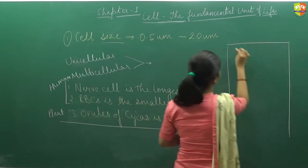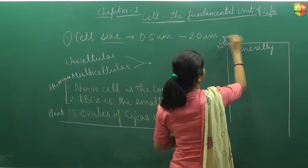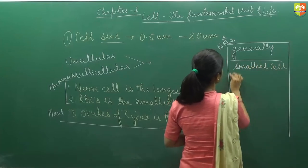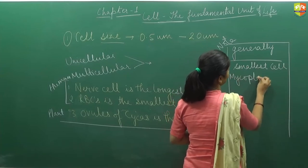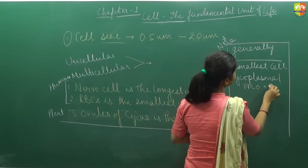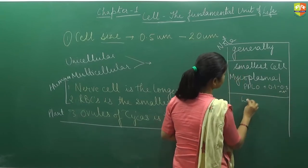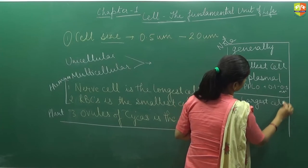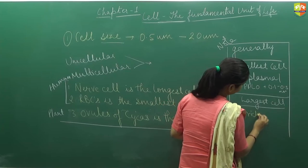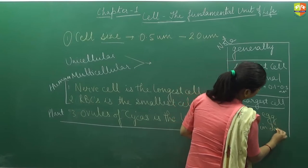Let me write this so that you will understand it. Generally, the smallest cell is mycoplasma. It is also known as PPLO. The size is 0.1 to 0.5 micrometer. And the largest is ostrich egg. It is about 15 centimeter in diameter.